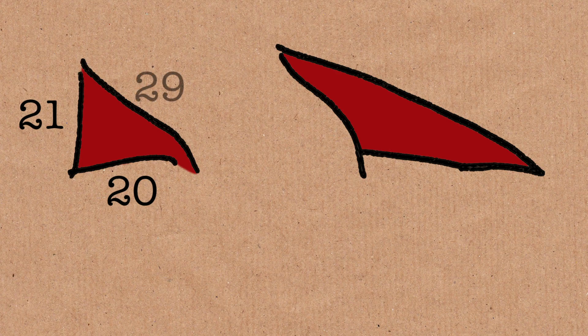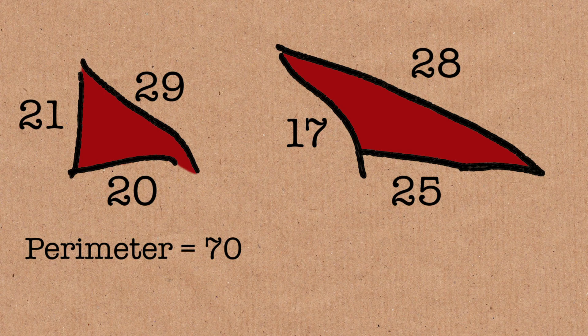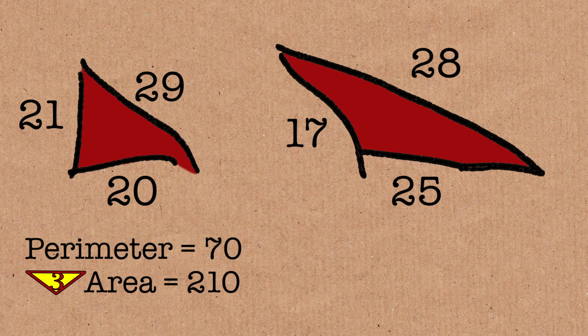And if you look at the perimeters and areas, because that's what we're doing, the perimeter of the first one is 70. The area is 210. Oh, so that would be on our list of triple. The area is triple the perimeter. This one, perimeter of 70, area of 210.